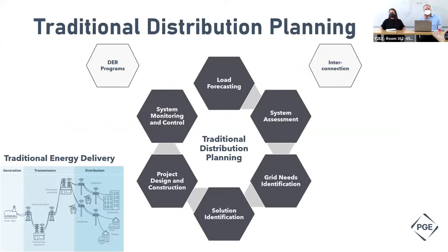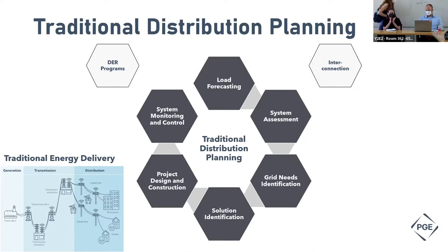Traditional distribution planning really focused on a cycle where you started with load forecasting — very high level, just taking who are the customers, total load and total peak demand across your entire service territory. It was doing system assessment, looking at the resources you had, what type of needs you might have — whether you have a capacity constraint or a localized issue — then identifying needs specifically: is it a transformer, a new feeder line? Then finding a suite of solutions, putting it into construction, and monitoring it. The end process of monitoring and controlling those devices never really fed back into the planning process, and that was a real gap. Also, our DR programs like energy efficiency and the way we connect to the grid for things like rooftop solar were not part of that planning process — they lived outside of distribution planning.